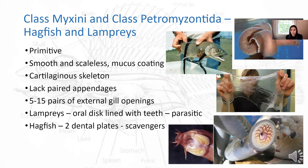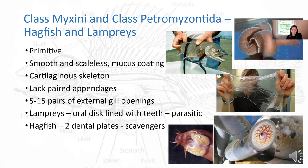Jawless fish all have a cartilaginous skeleton, so no true bones. They lack paired appendages — no pectoral fins or pelvic fins. They have five to fifteen pairs of external gill openings and really unique mouth parts. Lampreys have an oral disc lined with teeth and are parasites — they latch on and suck nutrients from a host. Hagfish have two dental plates and are scavengers. They also have barbels, which are sensory, to help find food to scavenge.